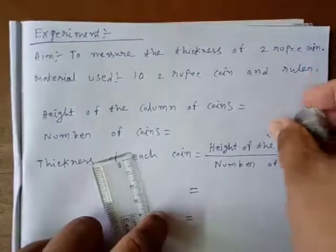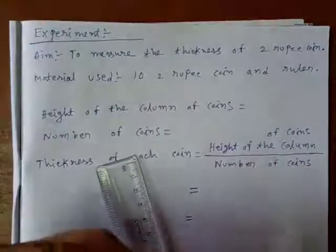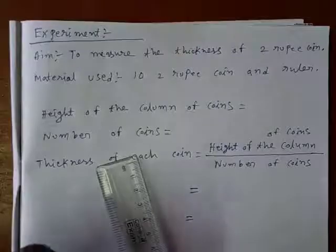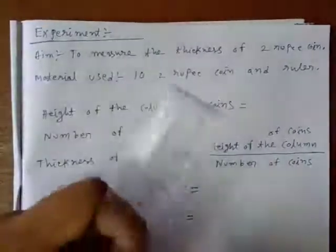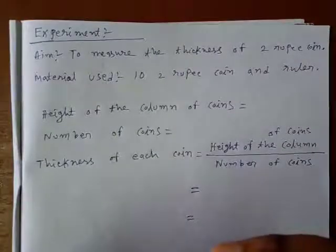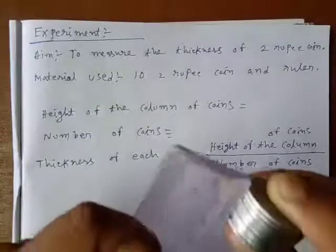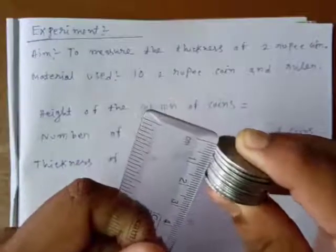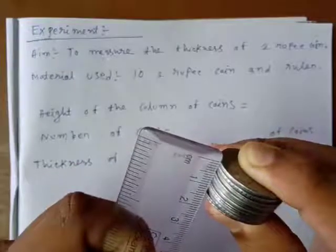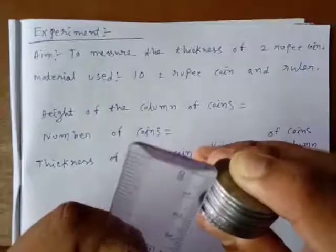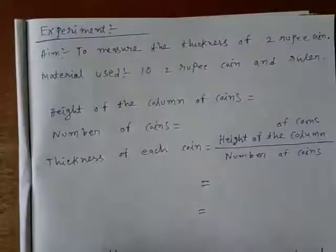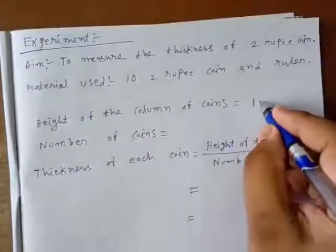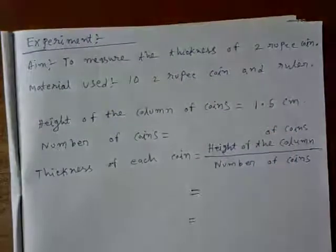So I am taking this like this and by holding it like this I am measuring the length. When I am measuring the length like this I got the value somewhere near 1.5 cm. So I got the height of the column is 1.5 cm.